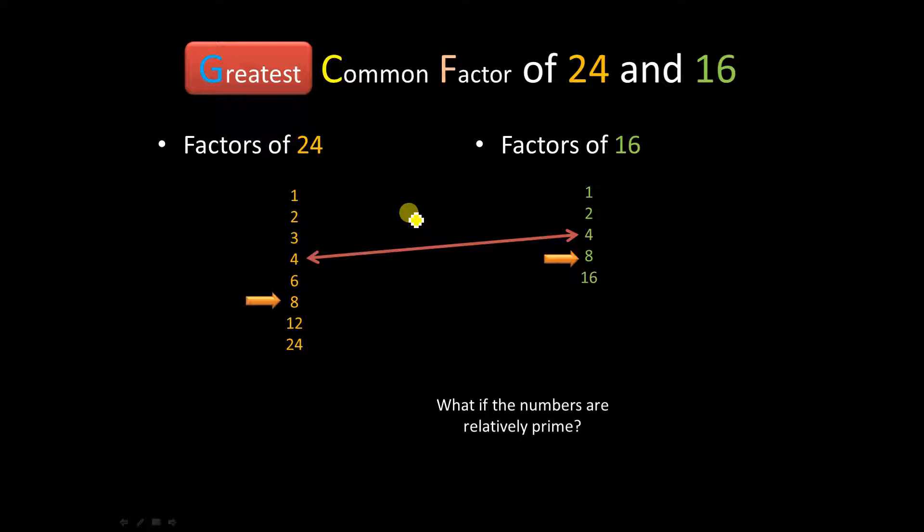One thing that gets a little tricky for students is, if these two numbers are relatively prime, what happens then? Again, we'll discuss that at the end of the video, but as you're watching, think about it. What would be the greatest common factor of two numbers that are relatively prime?